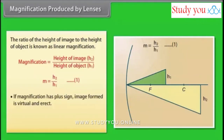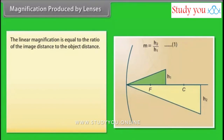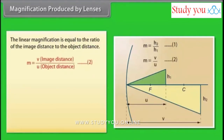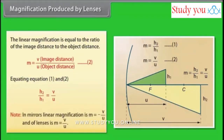If magnification has a plus sign, the image formed is virtual and erect. If magnification has a minus sign, the image formed is real and inverted. The linear magnification equals the ratio of image distance to object distance: M = v/u. Note: for mirrors, M = −v/u; for lenses, M = v/u.